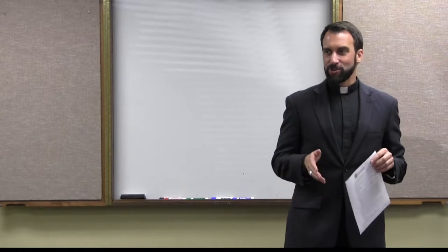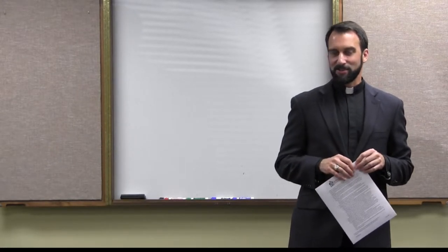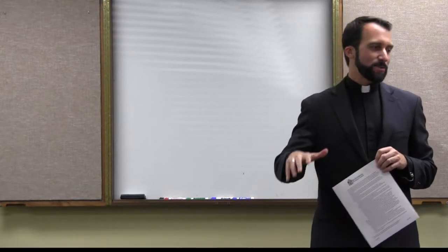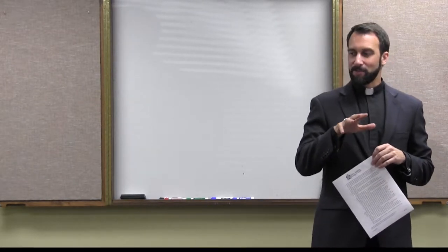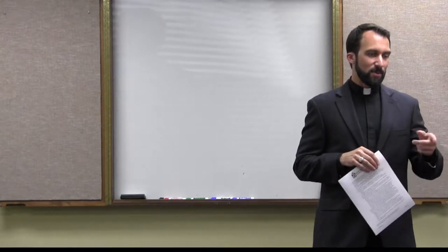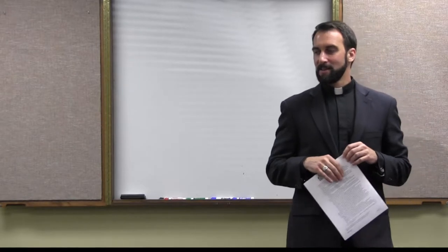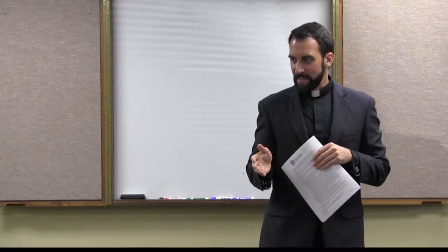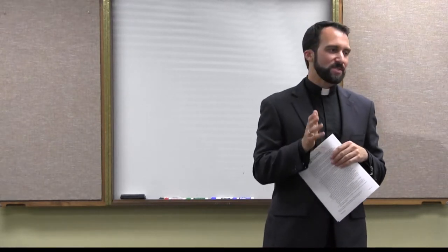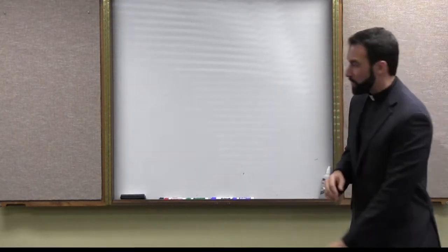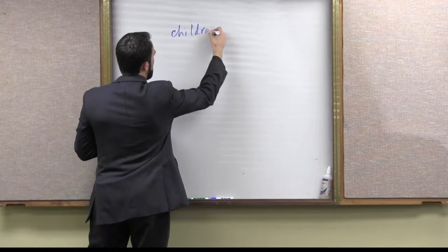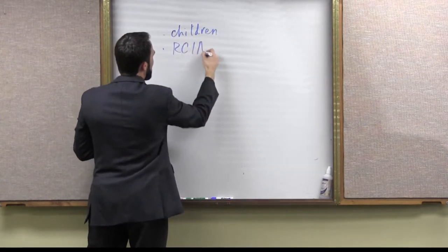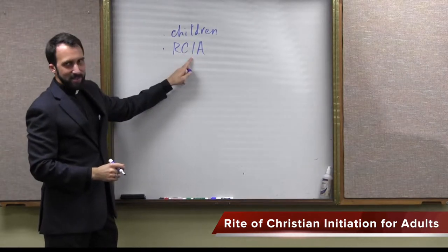As a bit of background, the rites that we have as a Church now were revised after the 1960s. In the Second Vatican Council, in the early 1960s, when all 2,000 bishops of the Church met together at the Vatican, they decided to revise the rites of the Church. The fruit of that is today what we know as the revised sacramental rites of the Church. This evening we'll focus first on the rite of baptism for children, and then on the rite of Christian initiation for adults — the RCIA.